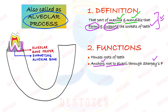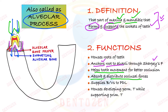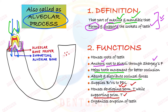Alveolar bone also helps the movement of teeth for better occlusion — that is when teeth contact the opposite teeth. It absorbs and distributes the occlusal forces placed over the teeth. It provides blood vessels for the periodontal ligament and houses the developing permanent teeth by supporting primary teeth. It also provides space for permanent teeth as they develop and organizes the eruption of teeth — the movement during eruption is also managed by the alveolar bone.